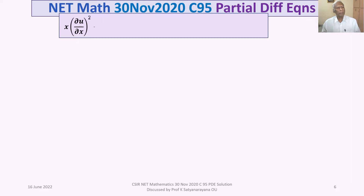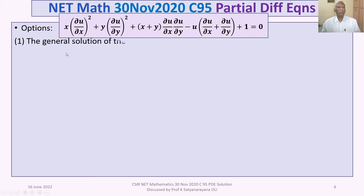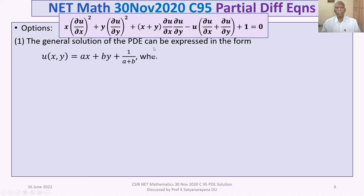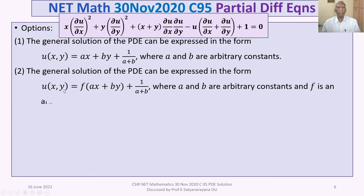Option one: the general solution of the PDE can be expressed in the form u(x, y) = ax + by + 1/(a+b), where a and b are arbitrary constants. Option two: the general solution can be expressed in the form u(x, y) = f(ax + by + 1/(a+b)), where a and b are arbitrary constants and f is an arbitrary function.